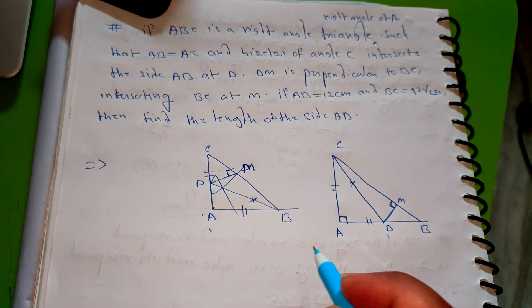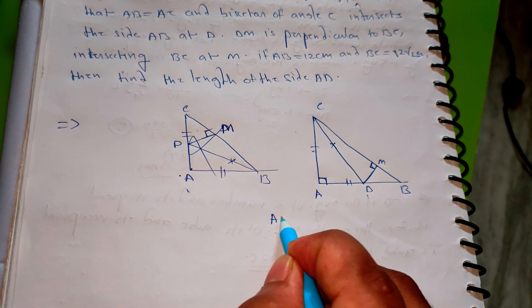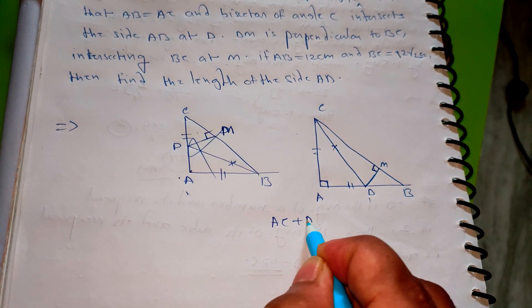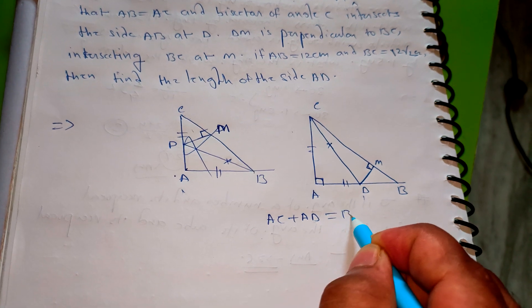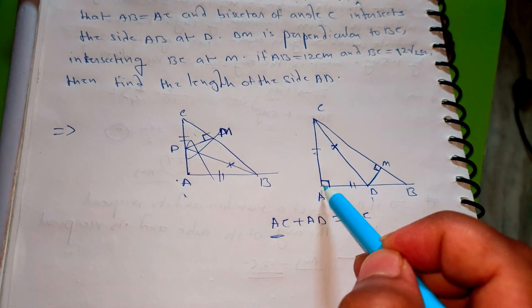You have to remember a formula: AC plus AD equals DC. C is from the angle bisector side.